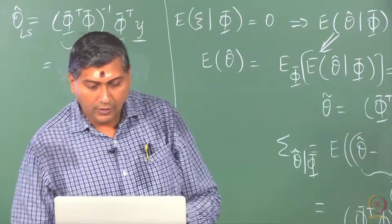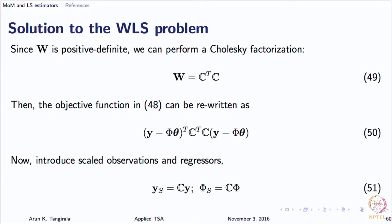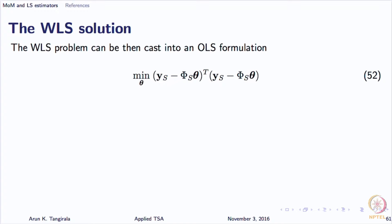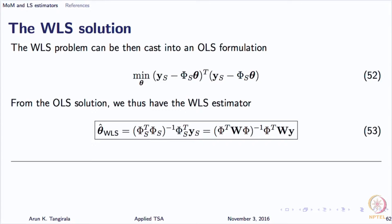To obtain the solution: since W is positive definite, we do a Cholesky factorization. You can factor a positive definite matrix as CᵀC, where C is the Cholesky factor, and rewrite the objective function accordingly. Then introduce scaled data: scaled Y is C times Y, and scaled Φ is C times Φ, so that the WLS problem is rewritten as an OLS problem in terms of the scaled variables. That gives you the solution to the weighted least squares problem directly.